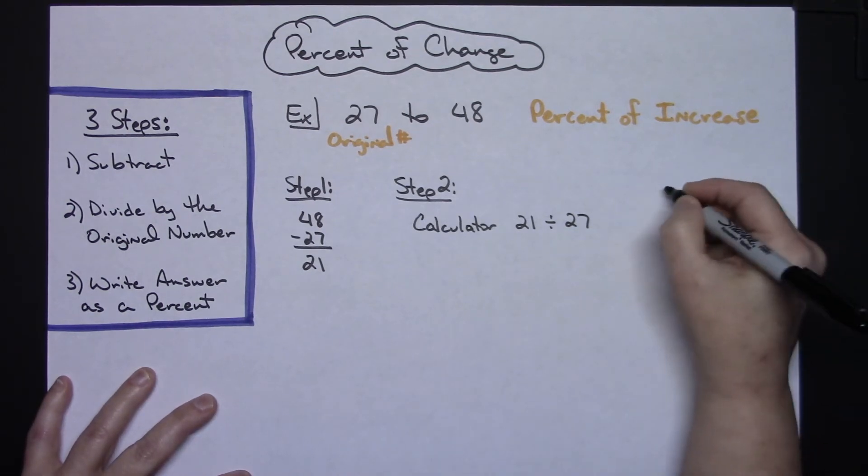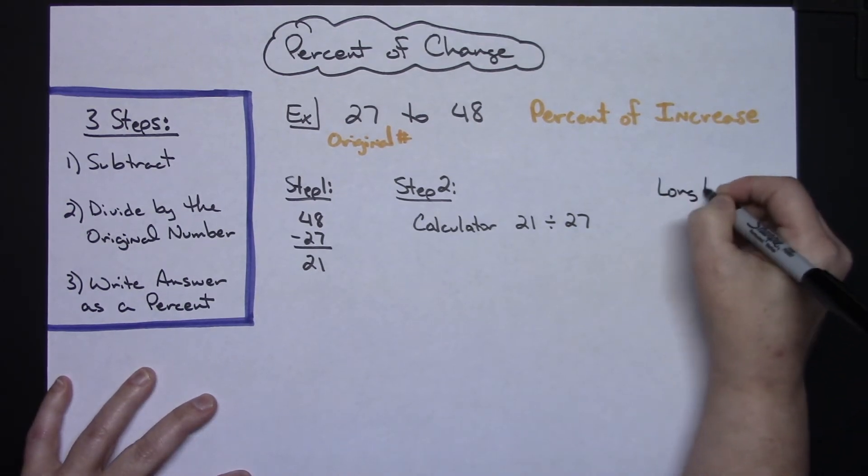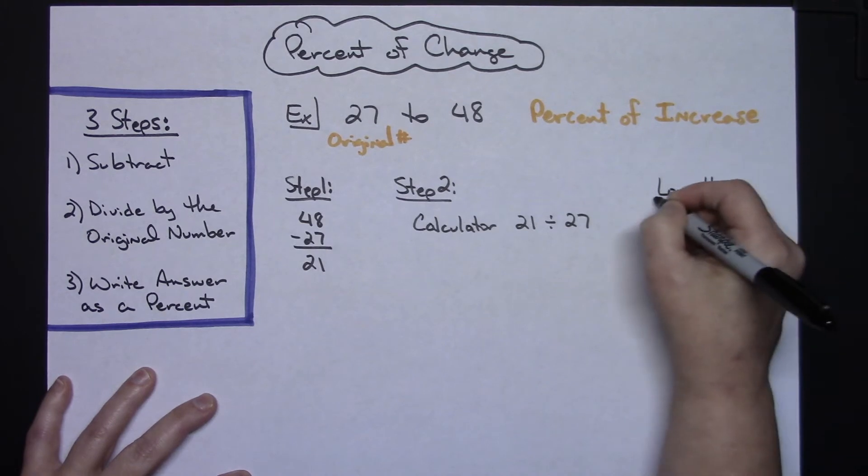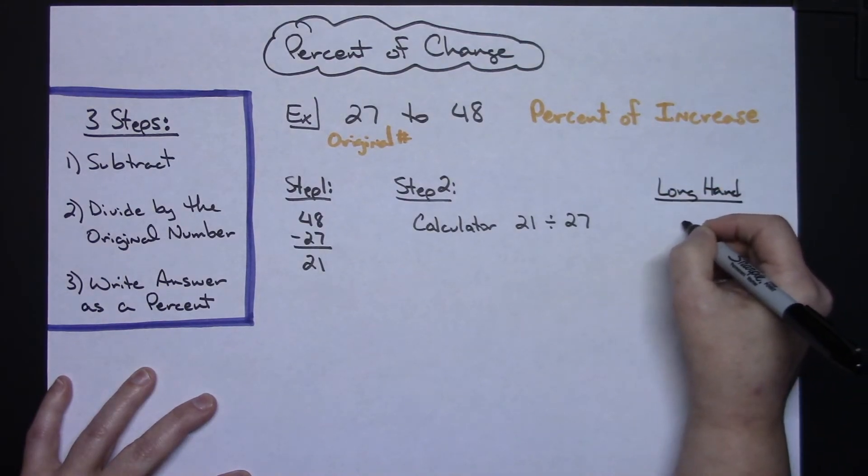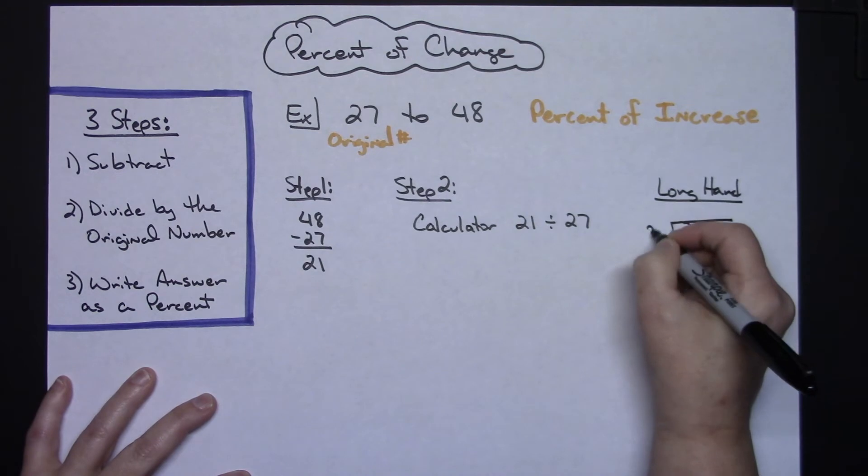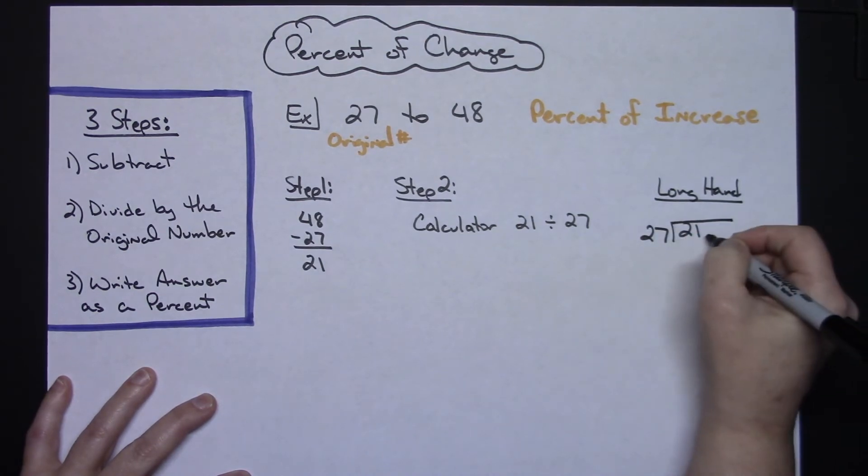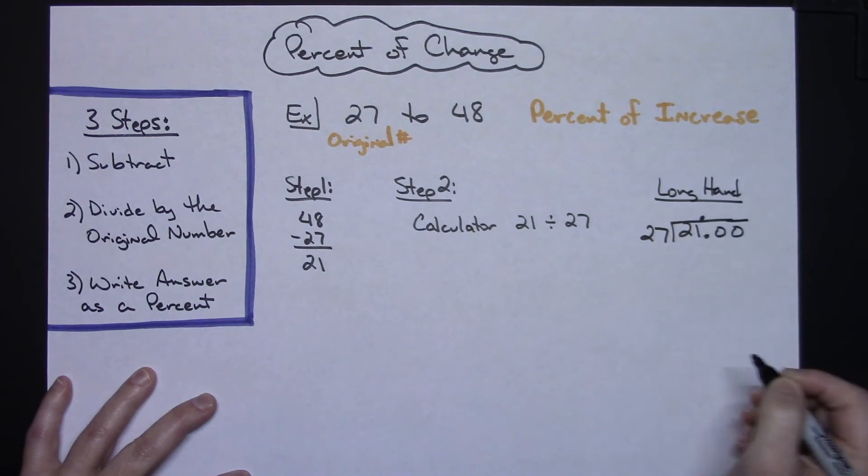If you are doing this longhand without the use of a calculator, then you would need to make sure that you put 21 on the inside of the box and the 27 on the outside of the box. Add that decimal point, add some zeros, and then go to the division.